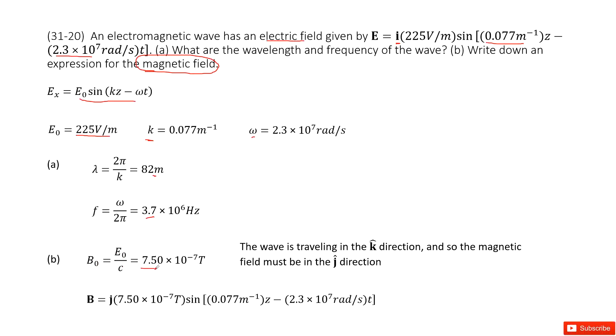Now determine the direction for the magnetic field. We know the electric field travels in the x direction and the wave travels in the k direction. So the magnetic field must be in the j direction.